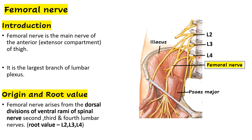Looking at the lumbar plexus, the ventral rami of L2, L3, and L4 each divide into a ventral division and a dorsal division. The ventral divisions of L2, L3, and L4 form the obturator nerve, whereas the dorsal divisions of L2, L3, and L4 form the femoral nerve.